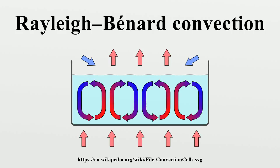Since there is a density gradient between the top and the bottom plate, gravity acts trying to pull the cooler, denser liquid from the top to the bottom. This gravitational force is opposed by the viscous damping force in the fluid. The balance of these two forces is expressed by a non-dimensional parameter called the Rayleigh number.